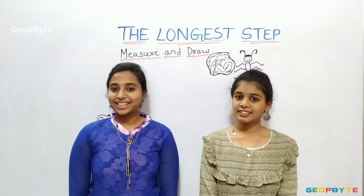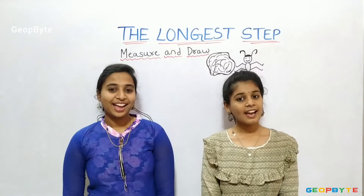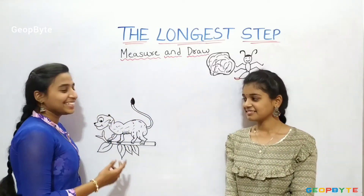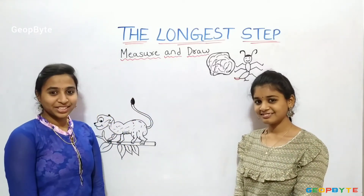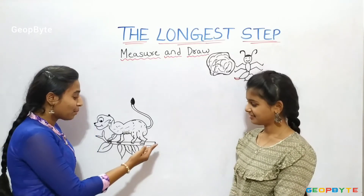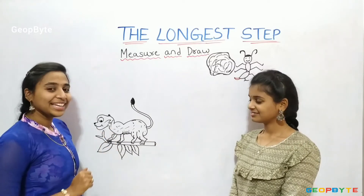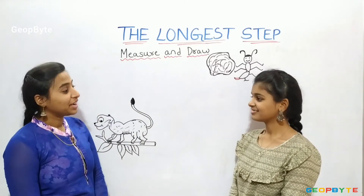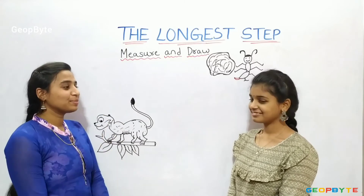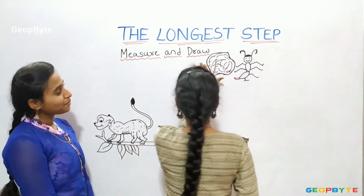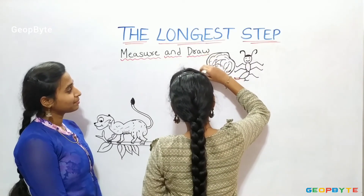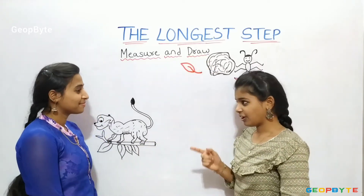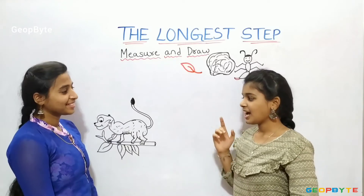Now let us get into the topic: Measure and Draw. Hey kids, see here. We have a picture with a branch of a tree, a monkey, a stone, and an ant. Now you draw a leaf two fingers away from the stone. Let us draw. You draw a banana five fingers away from the monkey.